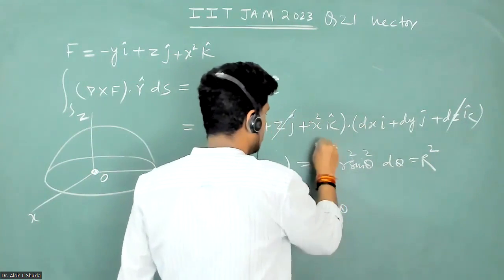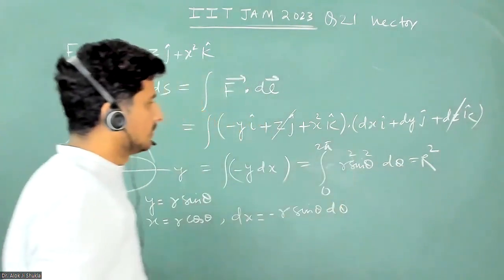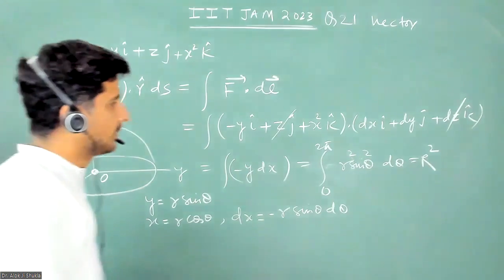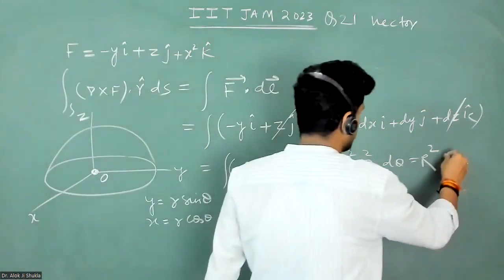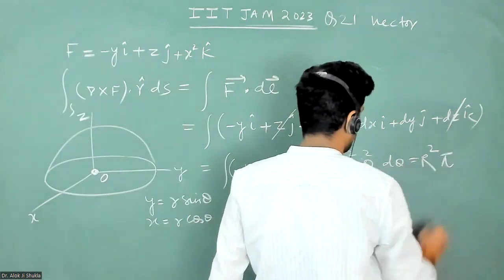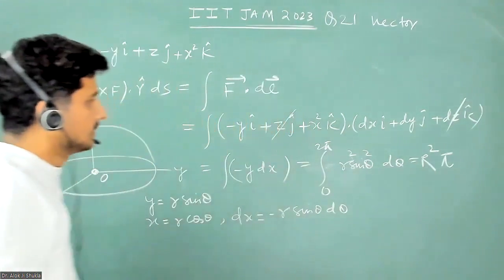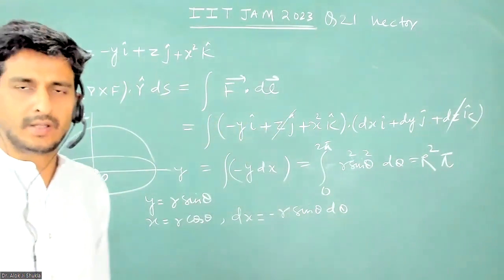and the limit will be 0 to 2π. So sin square theta d theta will be π over 2, which will be 2π by 2, that will be π. So the answer is π r square. Thank you.